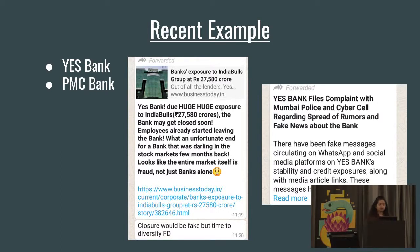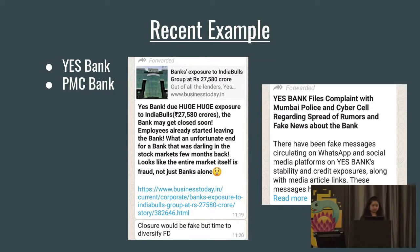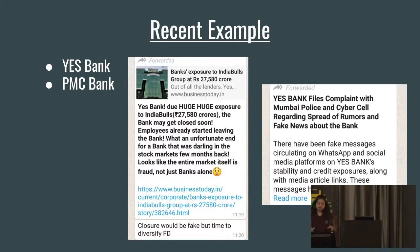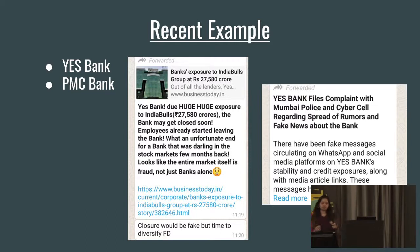The WhatsApp forward says there is a huge exposure to a defaulting company, which could cause a similar incident with Yes Bank as there was with PMC Bank. They also sent a link from Business Today, which is a credible agency. So anyone reading just this message without checking the article would think it is credible news. However, if you go to the article and read it, you will not find a single sentence that corresponds to the message. Yes Bank saw the effects of this and decided to file a complaint with the cyber cell — but who does that for individuals?